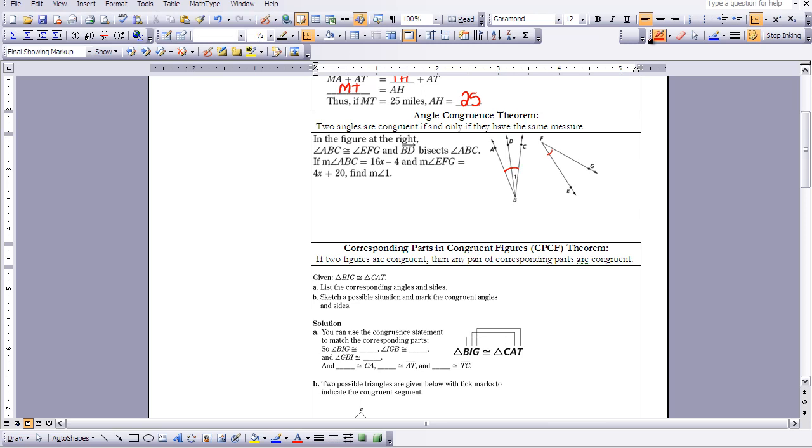We also know that BD bisects angle ABC. So by definition of angle bisector, we know that this angle would equal this angle. So angle ABD and angle DBC would also be congruent.